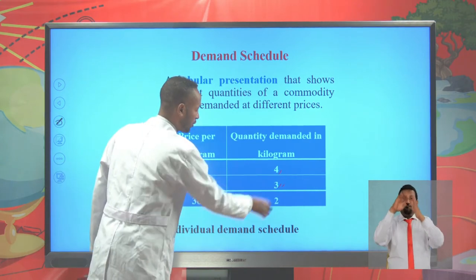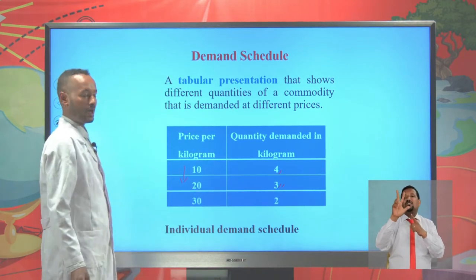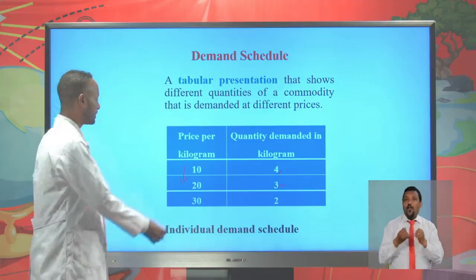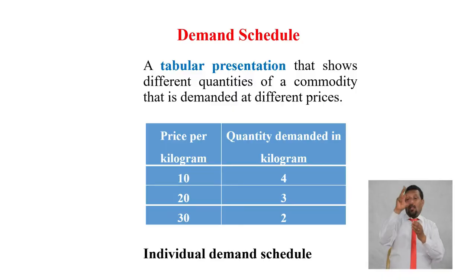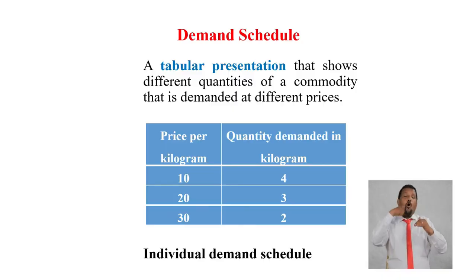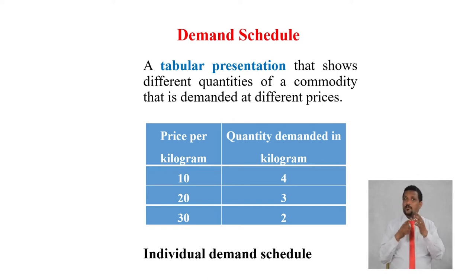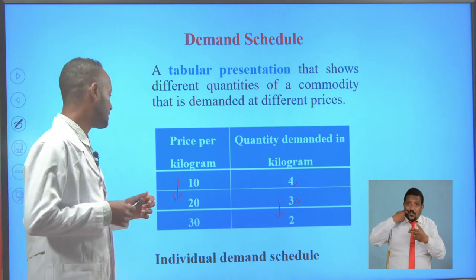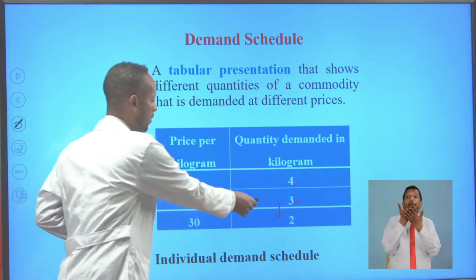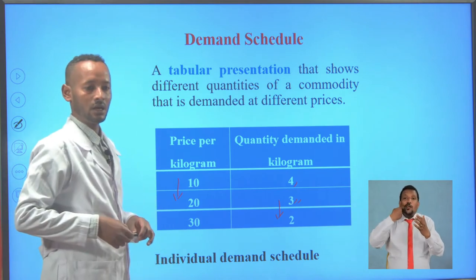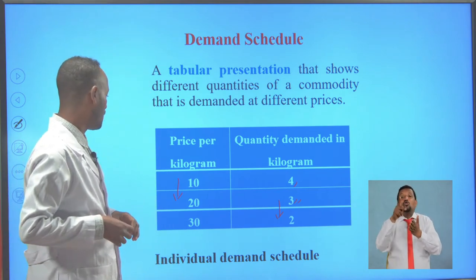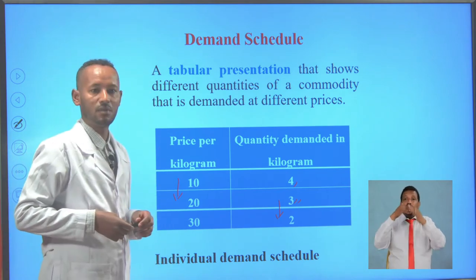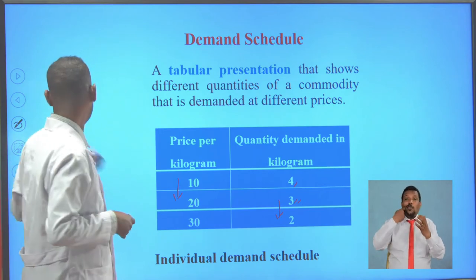When the price of orange reduced from 4 kg to 3 kg, and finally when the price reached 30, the quantity demanded for orange declined from 3 kg to 2 kg. From this we can show that as the price of a kilogram of orange increases, the quantity demanded will decline, and as the price decreases, the quantity demanded will increase.